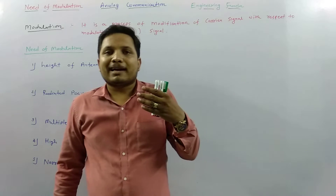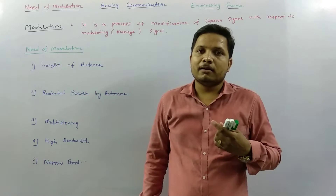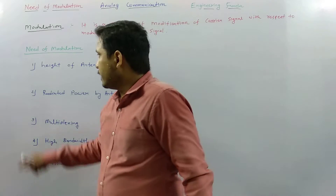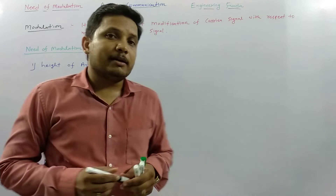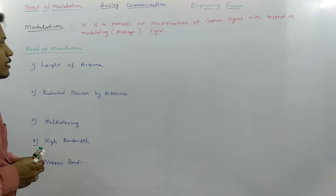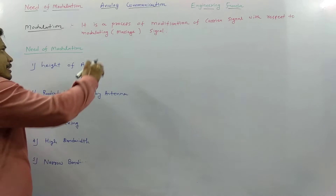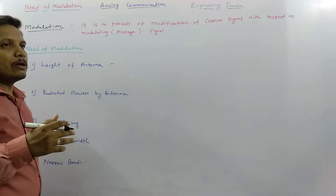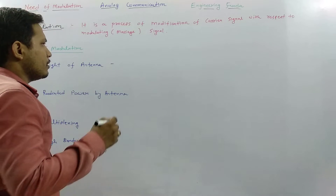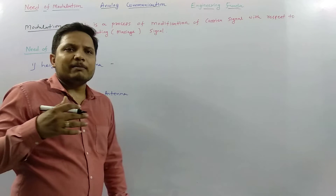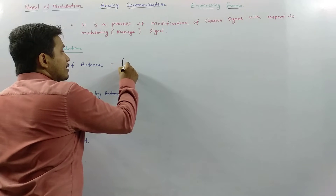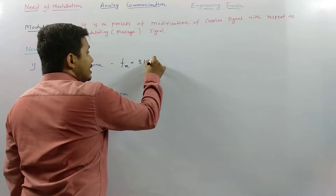There are a few key things that explain why modulation is essential in a communication system. The first is the height of the antenna. For example, if we have a voice signal as our modulating signal, the voice signal frequency range is from 20 Hz to 20 kHz. For simple understanding, consider my voice signal frequency at around 3 kHz.